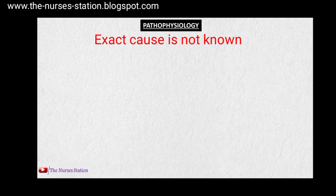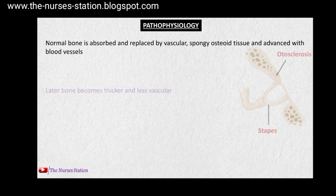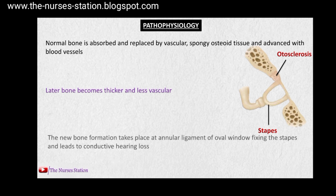Now the pathophysiology. What happens is that the normal bone is absorbed and replaced by a vascular spongy osseous tissue advanced with blood vessels, and later the bone becomes thick and less vascular. Then new bone formation takes place at the annular ligament of the oval window, which fixes the stapes and leads to conductive hearing loss.